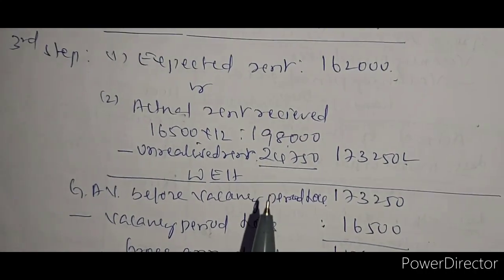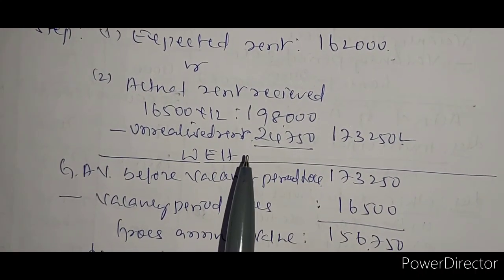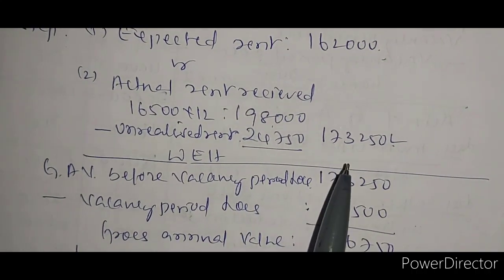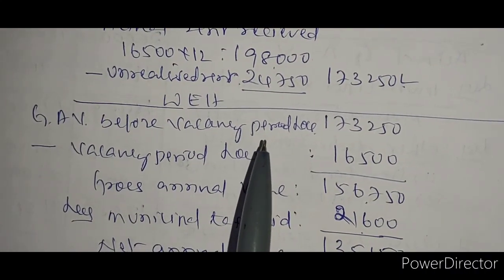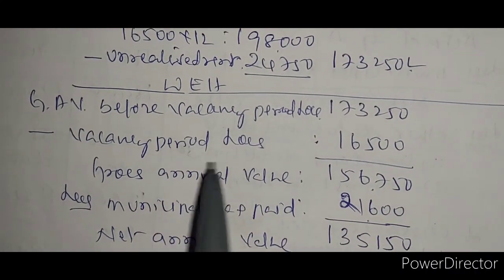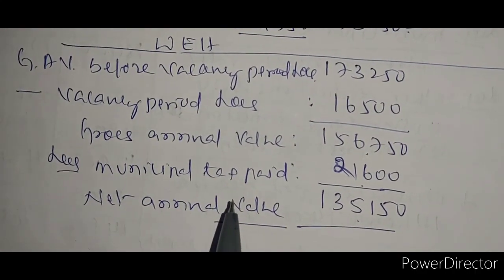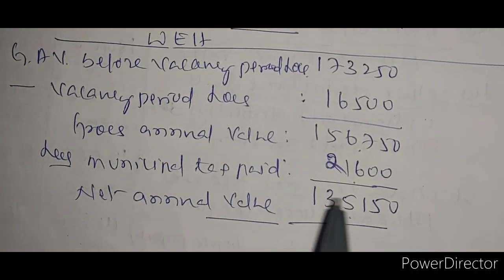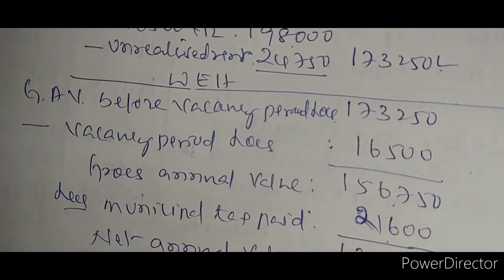For the deduction steps: actual annual rent minus unrealized rent gives the actual rent figure. Then gross annual value before vacancy period loss, minus vacancy period loss, minus municipal tax paid by the owner, gives the net annual value. This covers Section B; next is Section C.